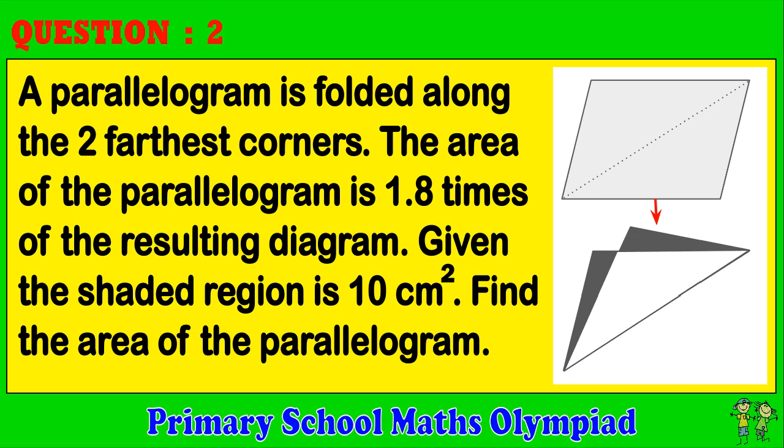Question 2. A parallelogram is folded along the two farthest corners. The area of the parallelogram is 1.8 times that of the resulting diagram. Given the shaded region is 10 cm², find the area of the parallelogram.